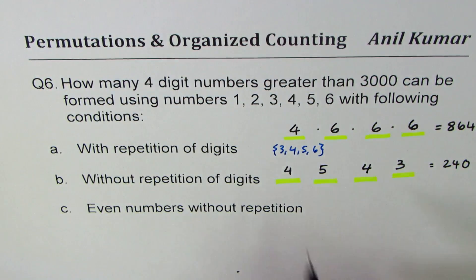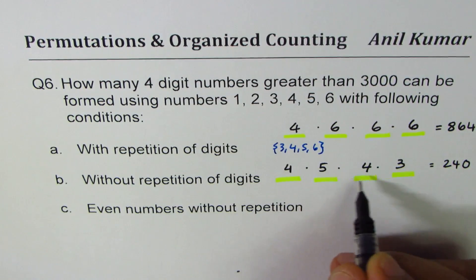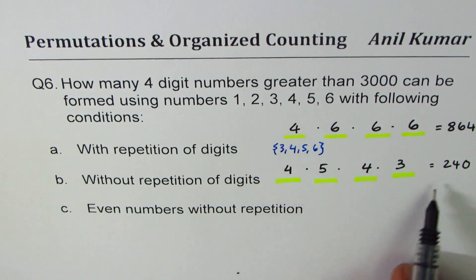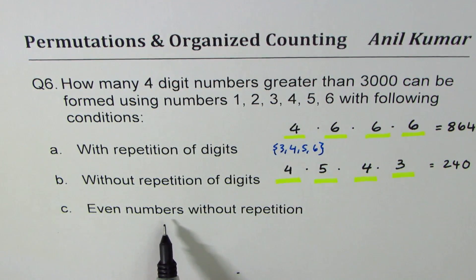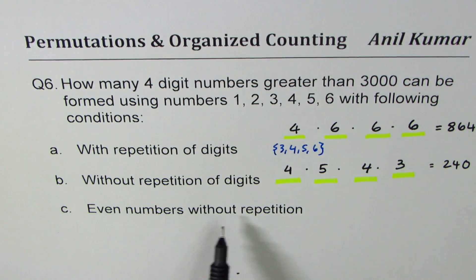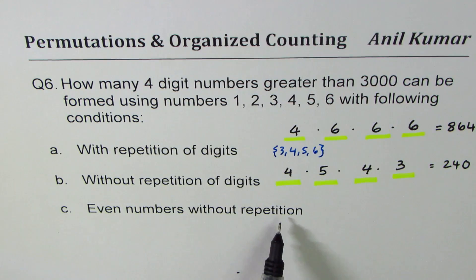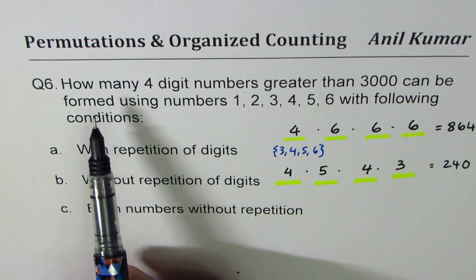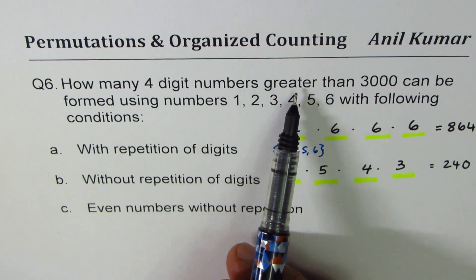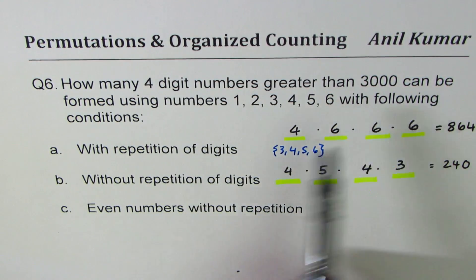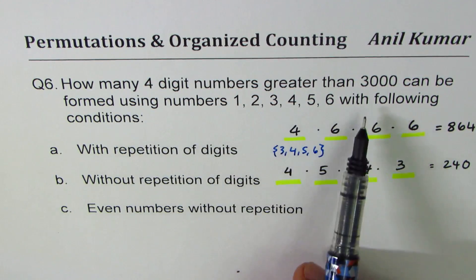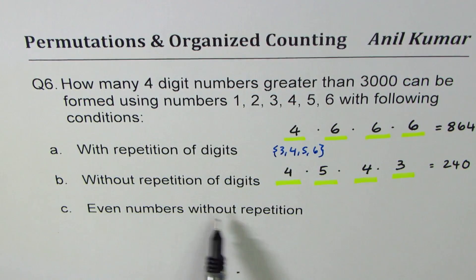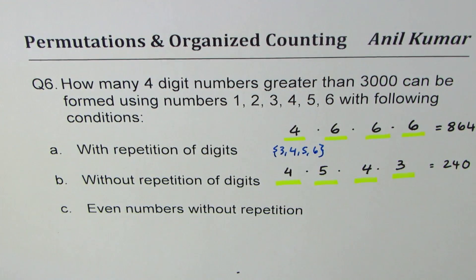If repetition is not allowed you cannot use the same number more than once, so you get far fewer options — 240 instead of 864. The last part is even numbers without repetition: how many four-digit numbers greater than 3000 can be formed using one through six, with the condition that they are even and digits are not repeated? Think about how to approach this.